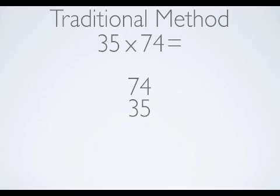I placed 74 on the top and 35 underneath. I prefer to place the larger factor on top. This is a multiplication problem, so I'll go ahead and put the symbol for multiplication next to the 35.